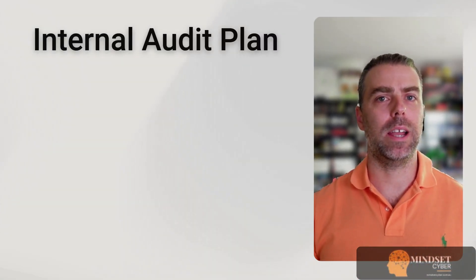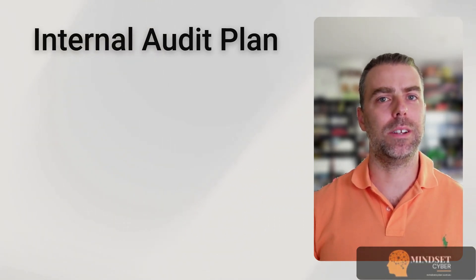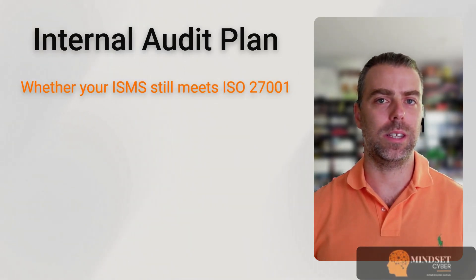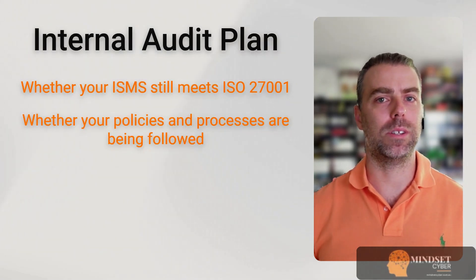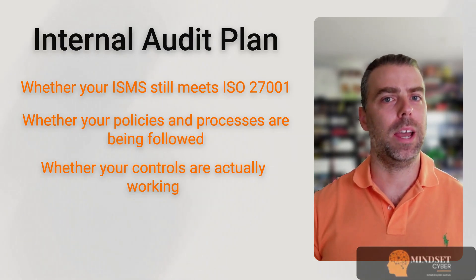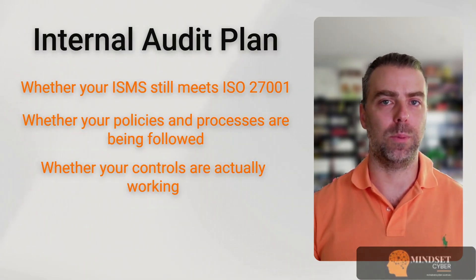Once your ISMS is up and running, ISO 27001 expects you to actively maintain and improve it — not just let it sit on a shelf. This next section is all about how you review your ISMS, deal with issues, and make sure it keeps getting better over time. First, create an internal audit schedule. You'll need to schedule audits at planned intervals to assess whether your ISMS meets the ISO 27001 standard, whether your policies and procedures are being followed, and whether your controls are actually working. The schedule should cover the full scope of your ISMS over time, and auditors should be impartial — meaning they don't audit areas they're responsible for.